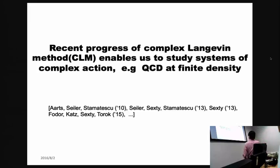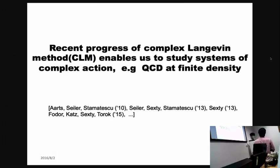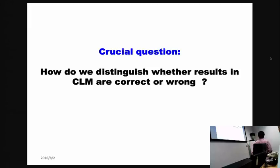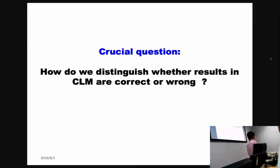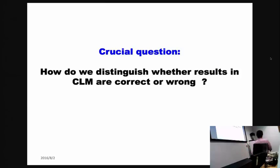Recently there have been many remarkable progresses in the study of the complex Langevin method: the formal proof of correctness was proposed, gauge cooling was developed, and it was applied to heavy dense QCD and QCD at high temperature. Still there is one crucial question: the complex Langevin sometimes works well but sometimes fails to reproduce the exact result. How do we distinguish whether the results from the simulation are correct or wrong?